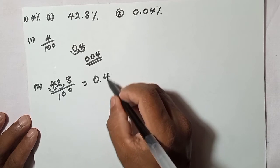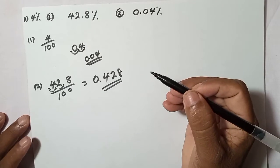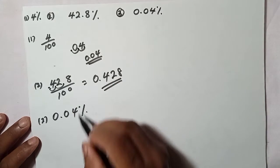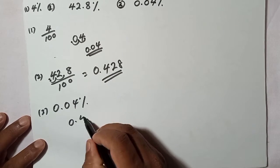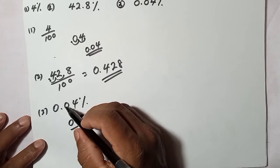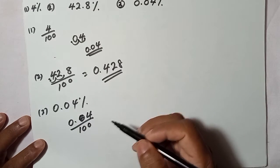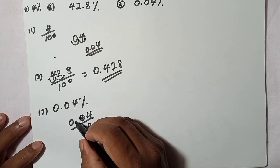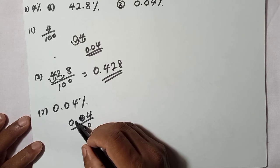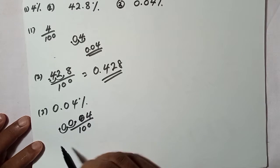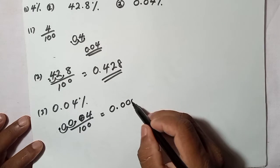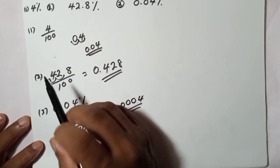The third example is 0.04%. That means 0.04 over 100, so again we divide by 100. Move the decimal point twice to the front: one, two — placing zeros as needed. The final answer as a decimal is 0.0004.